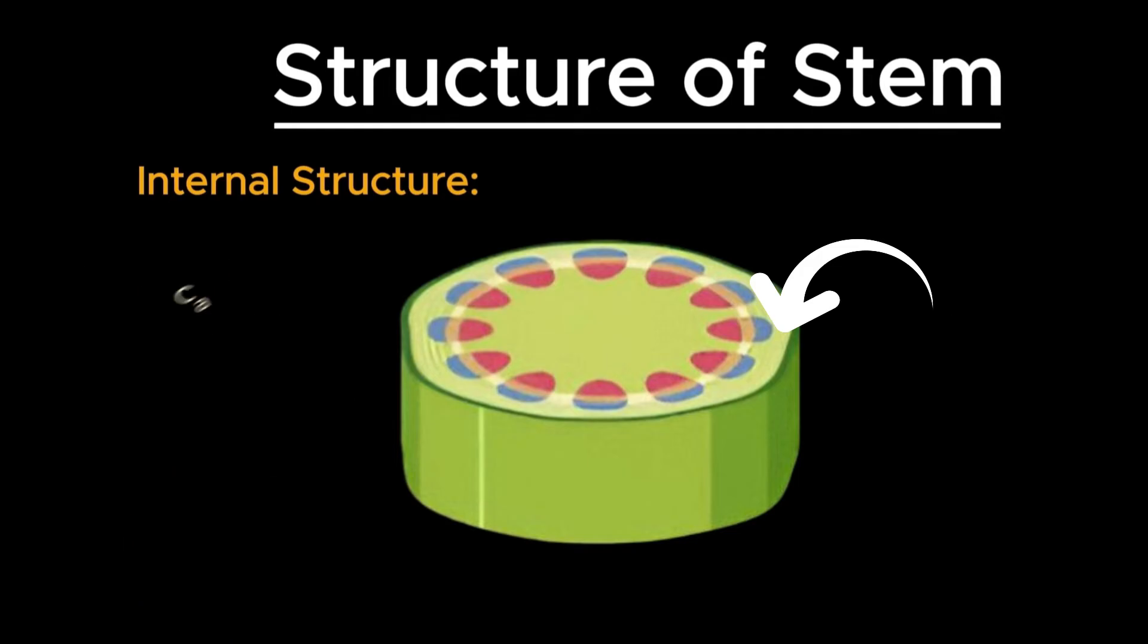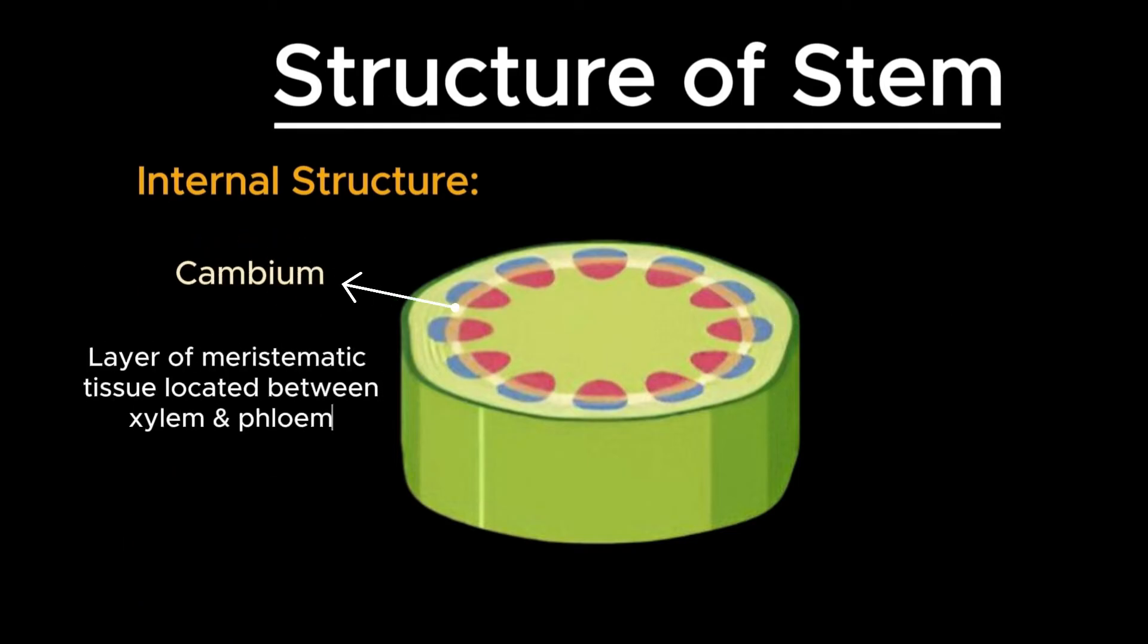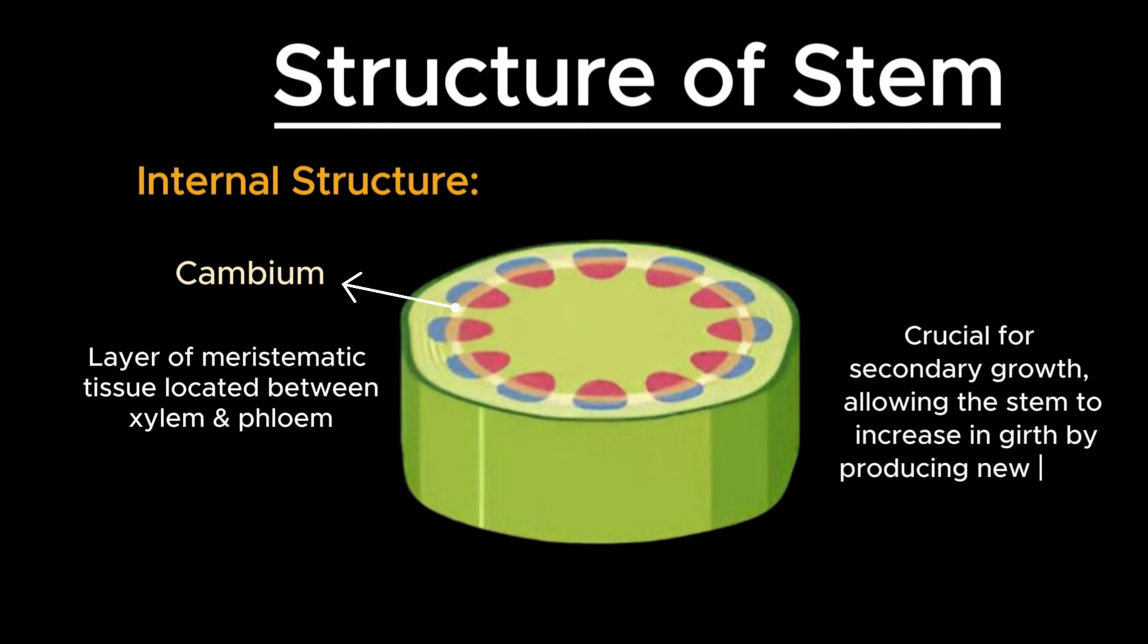In dicot stems, the cambium is a layer of meristematic tissue located between the xylem and phloem. The cambium is crucial for secondary growth, allowing the stem to increase in girth by producing new xylem and phloem cells.